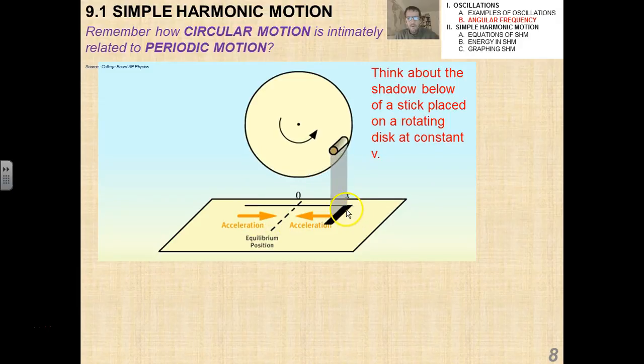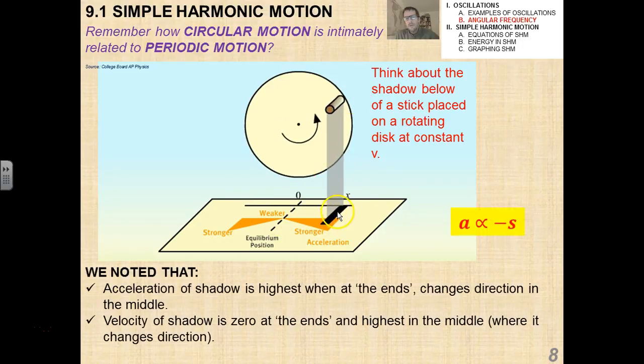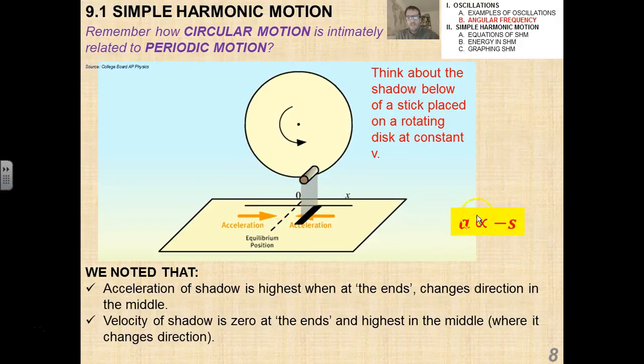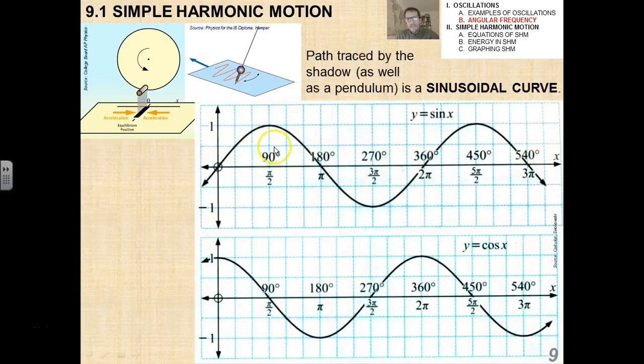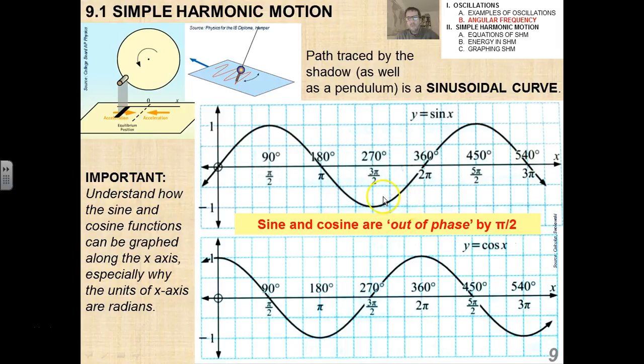And I also want to remind you how circular motion was intimately related to periodic motion, and this particular illustration here really, really shows it best, I think. We've talked about how the shadow goes back and forth, maximum acceleration on the edges, minimum acceleration in the middle, and so forth, right? And the actual shadow is being created by the fact that there's circular motion occurring. A is proportional to negative s again and again and again and again. We noted that the velocity of the shadow is also 0 at the ends and highest in the middle. And we can actually then think about this as on a graph as a sinusoidal curve. And remember, the only thing, the only difference between the sine and the cosine is a phase shift. And they're out of phase by π over 2, as you know. This is all sort of old hat for you guys. Important for you to understand how sine and cosine functions can be graphed. We don't really deal in this class with tangent functions. Tangent functions don't really represent or model any sort of physical phenomenon that we're interested in in this class. So we're only dealing with sinusoidal functions.